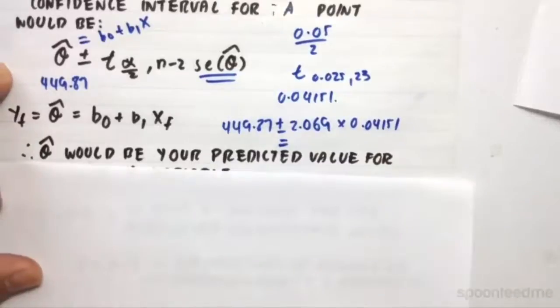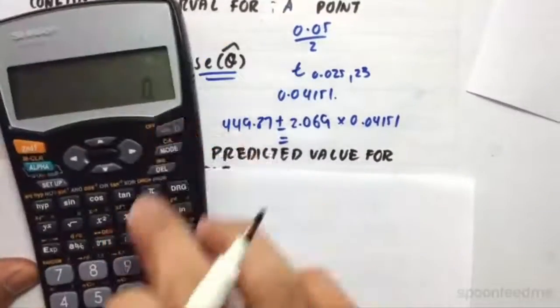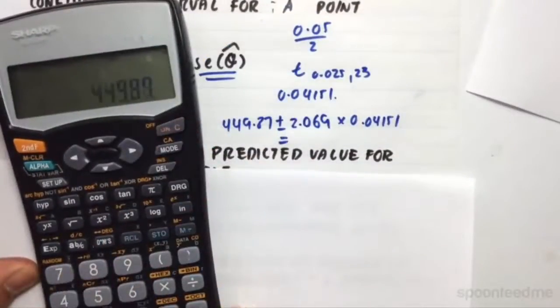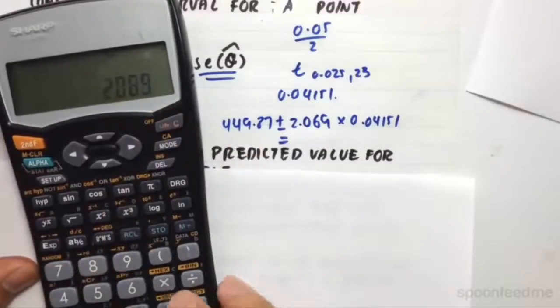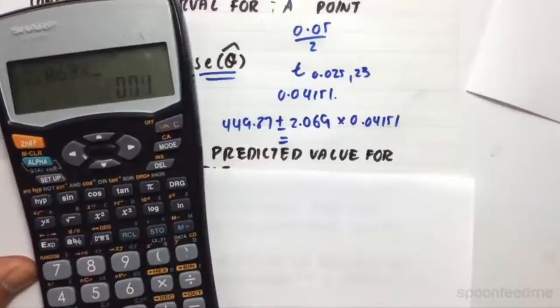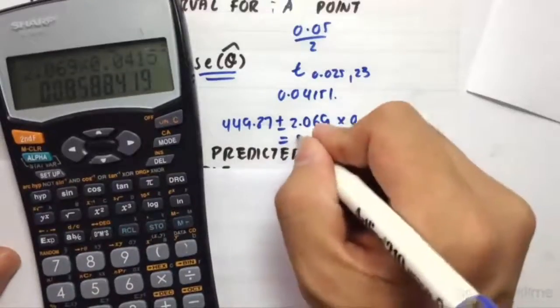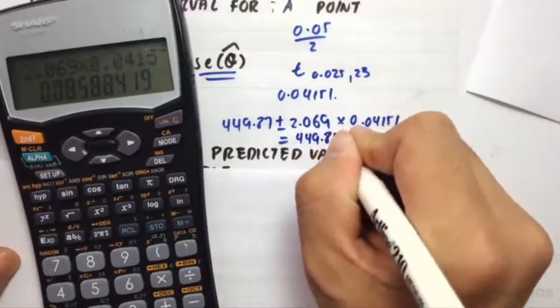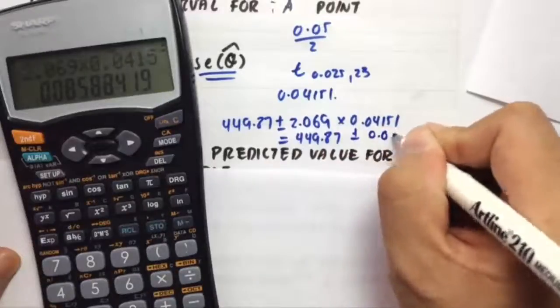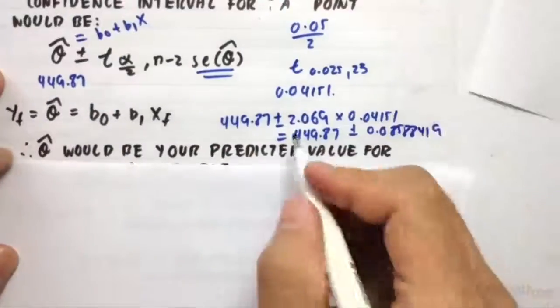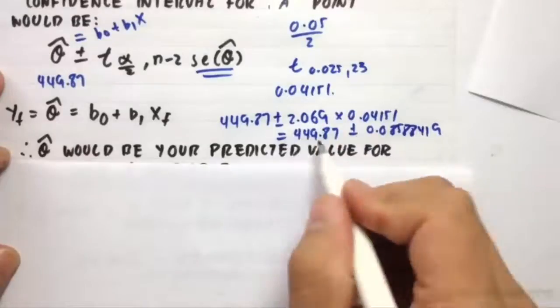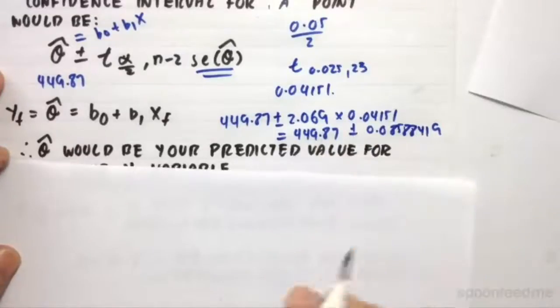And then that would give you a bounds of 449.87 plus, will just be 2.069 times 0.04151. So it'd just be 449.87 plus or minus 0.08588419. So the upper bounds would be this number plus that. And the lower bounds would be this number minus that.